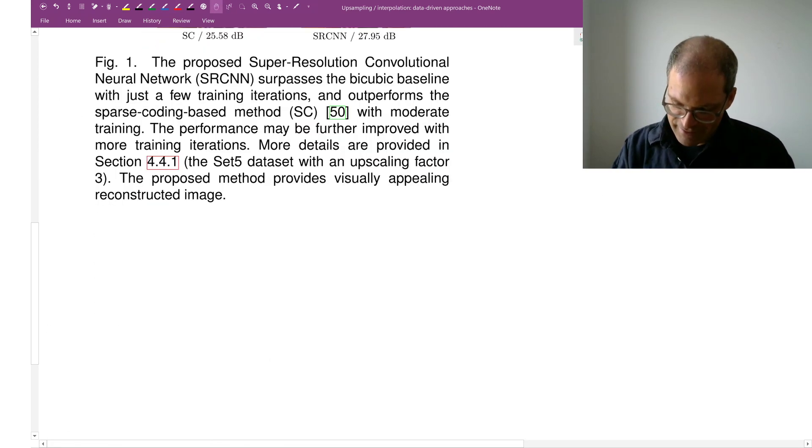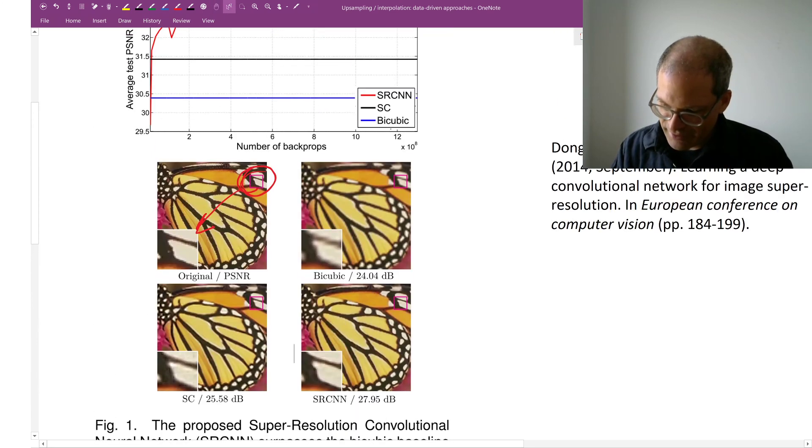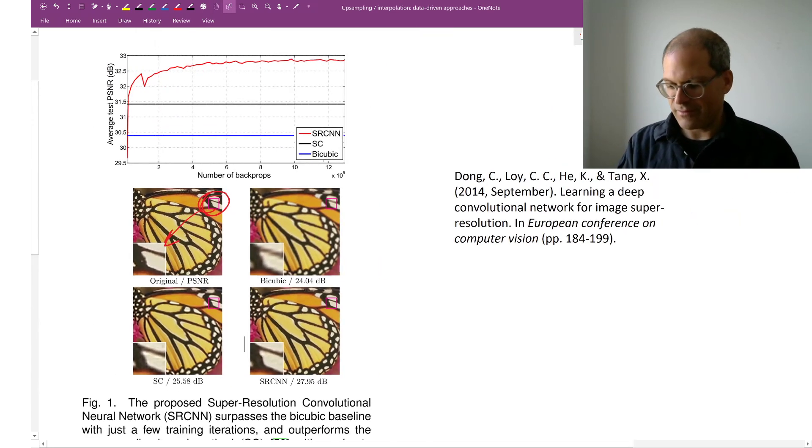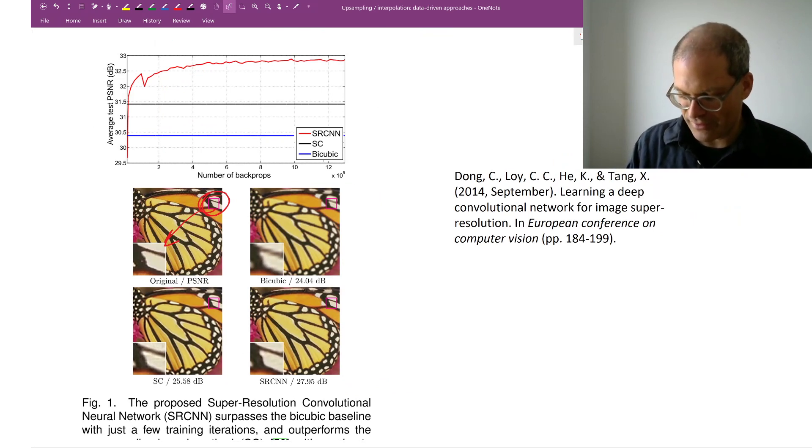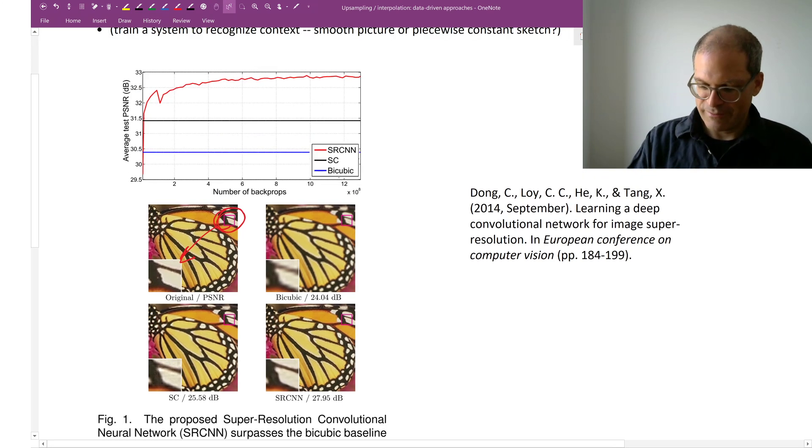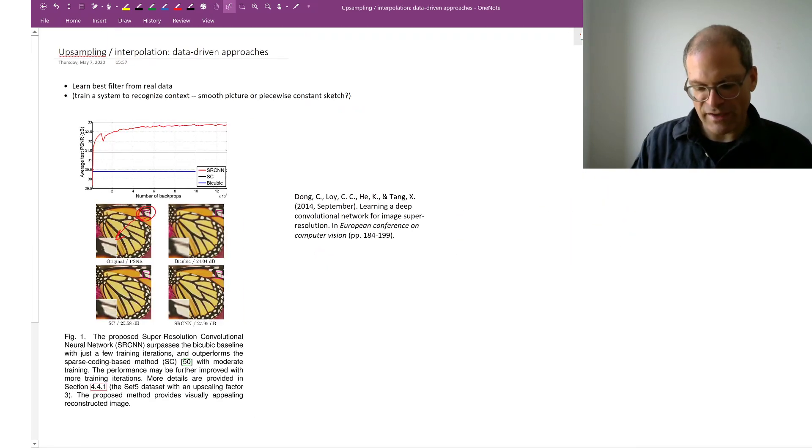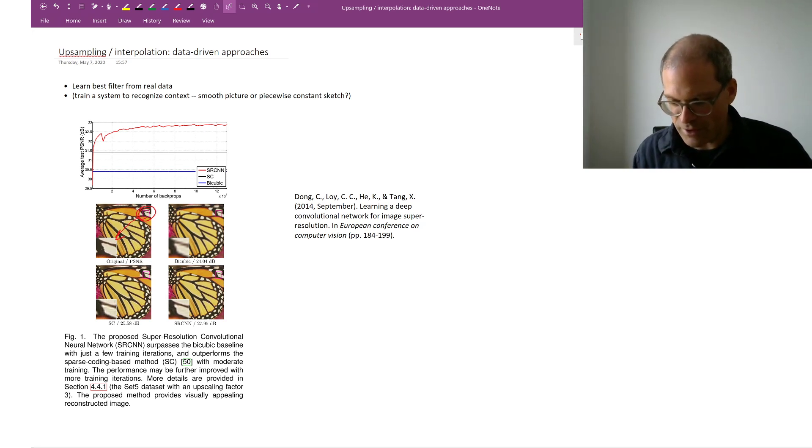And then you can try it on other data. This is just one of the early important papers that showed that this worked better. So essentially the network tries to recognize locally, is this image locally piecewise constant or is this image locally wavy? And then it adjusts its response or its local interpolation method to that. And it does take training. So you need a GPU to train such a thing. But once it's trained, it will give you better results.